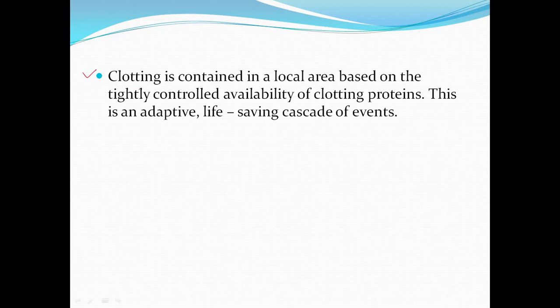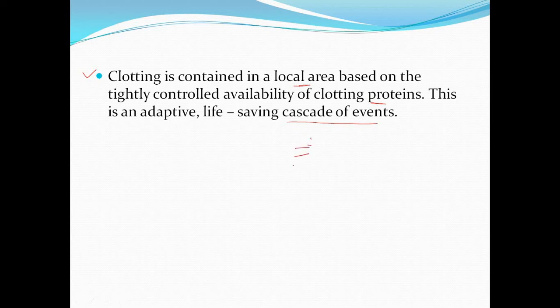Clotting is contained in a local area — any area such as the hand, knee, or leg — based on the tightly controlled availability of clotting proteins. If clotting proteins are insufficient, it fails to clot and seal the wound. This is an adaptive, life-saving cascade event. A cascade event means one event following another in sequence — a cascade-like stack.